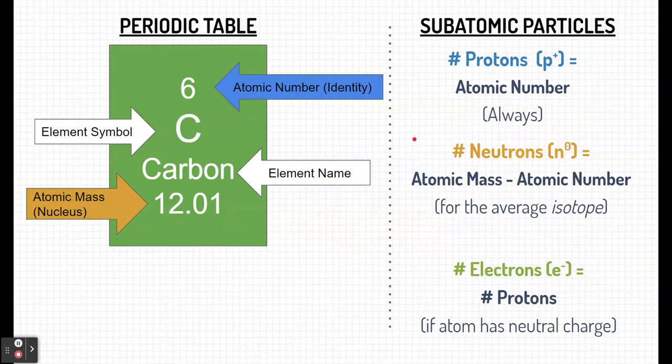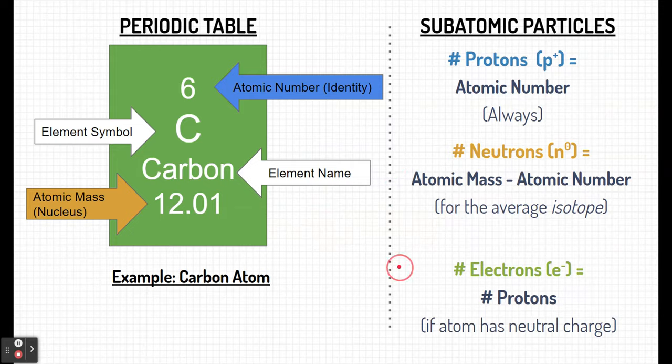So let's try this out. Here's carbon. If we take a look on our periodic table, we're starting with the atomic number six. That's the number of protons. There are six protons for carbon.